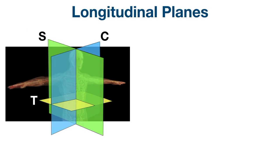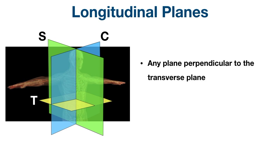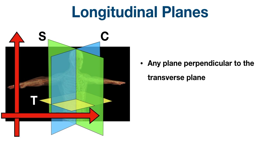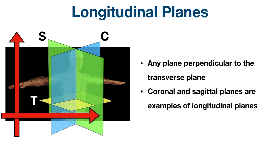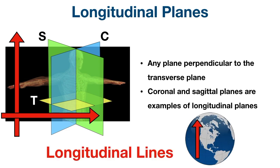There are a couple of other planes you might hear about. A longitudinal plane is any plane that is perpendicular to the transverse plane. The sagittal and coronal planes both run perpendicular to the transverse plane, so both are examples of longitudinal planes. A simple trick to remember: think of the globe's longitudinal lines that run up and down — this helps you remember that longitudinal planes run vertically, perpendicular to the transverse plane.